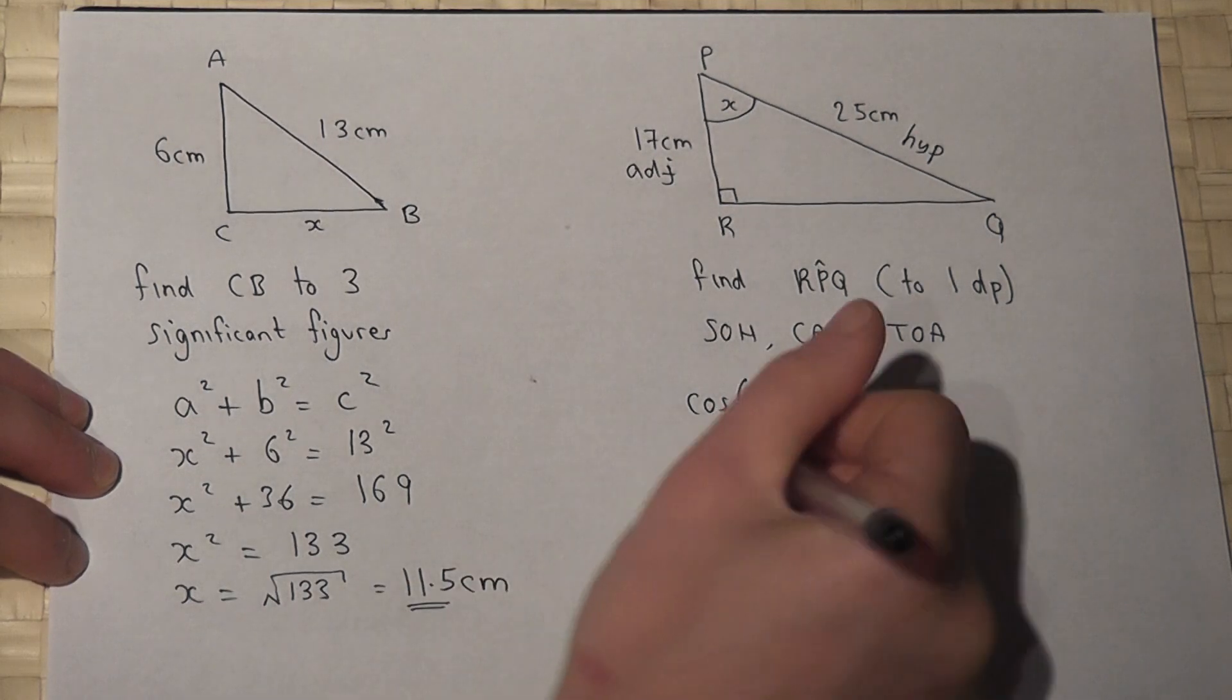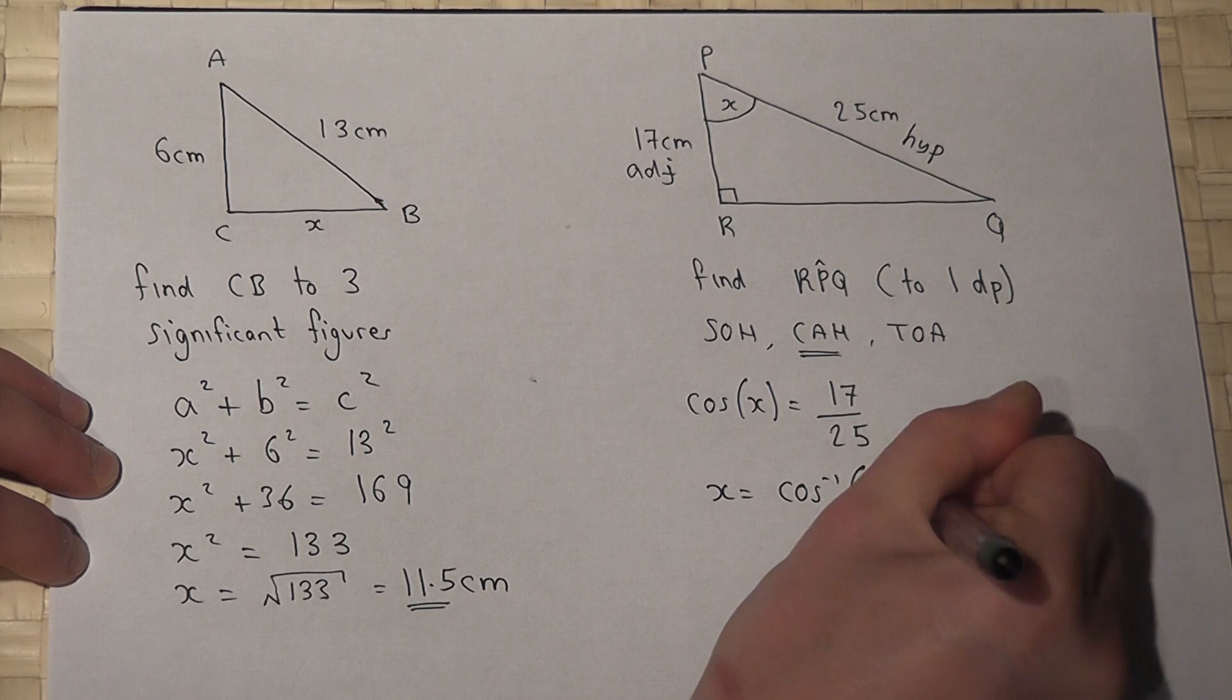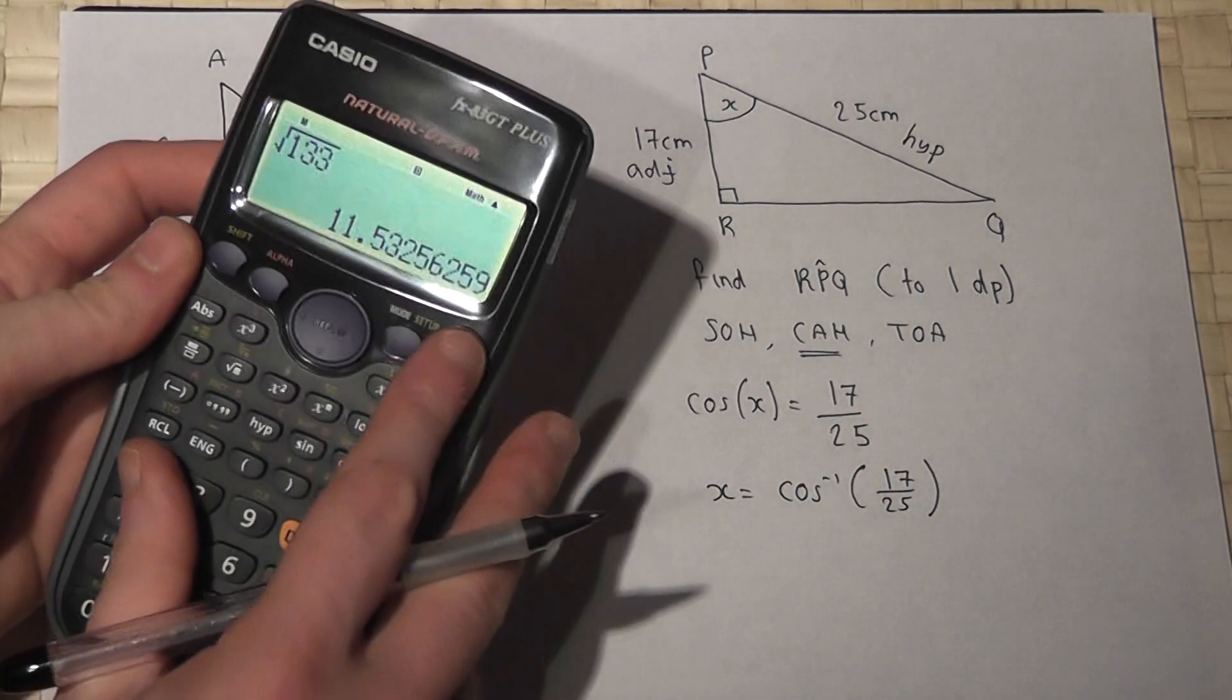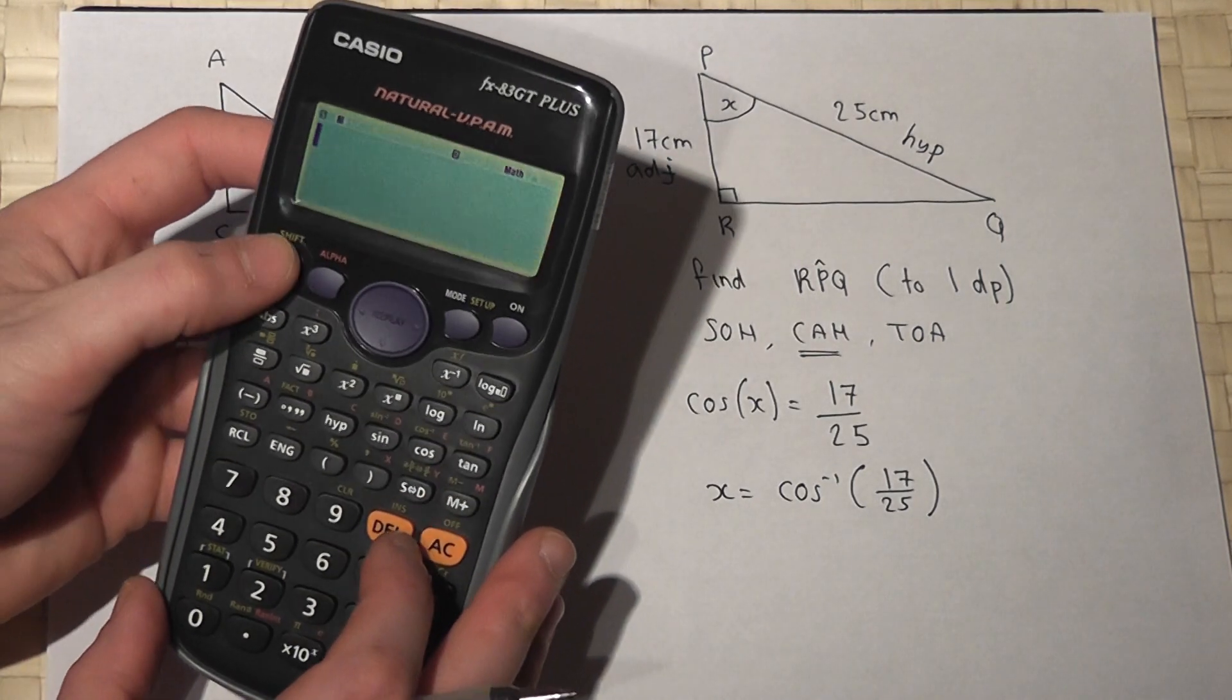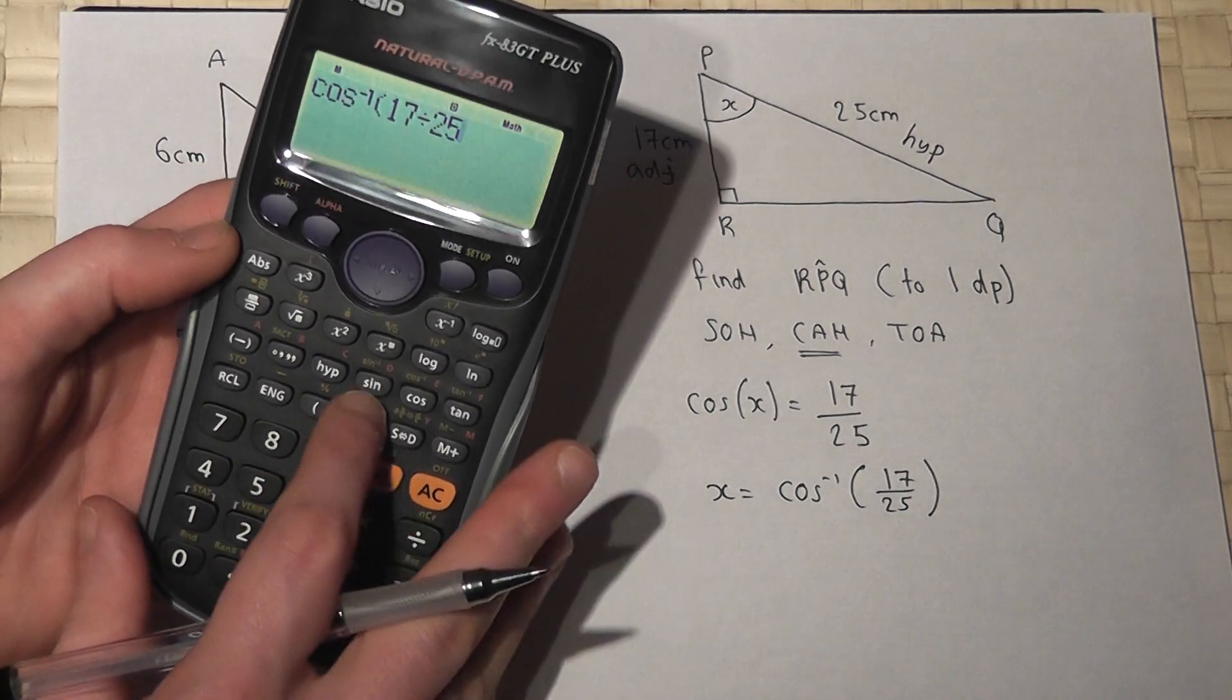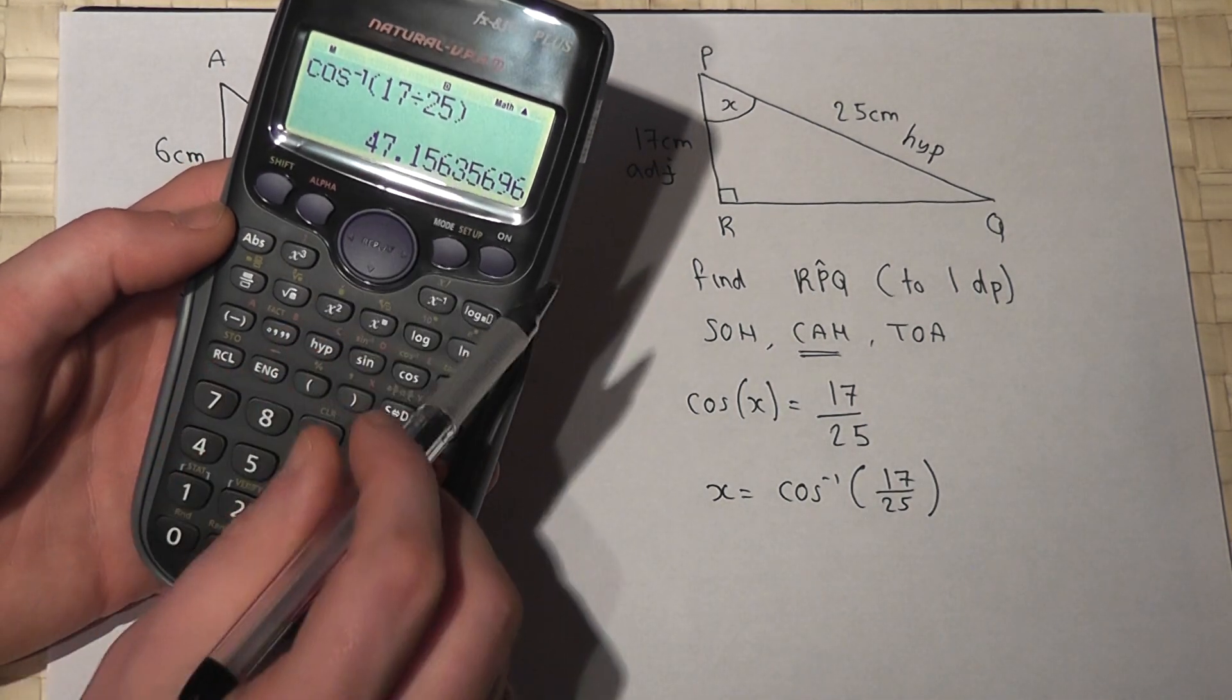So to work out the angle, I must use the inverse cos button of that particular fraction. So if I press shift cos and write 17 over or divide by 25 into my calculator and press enter, then this gives the angle.